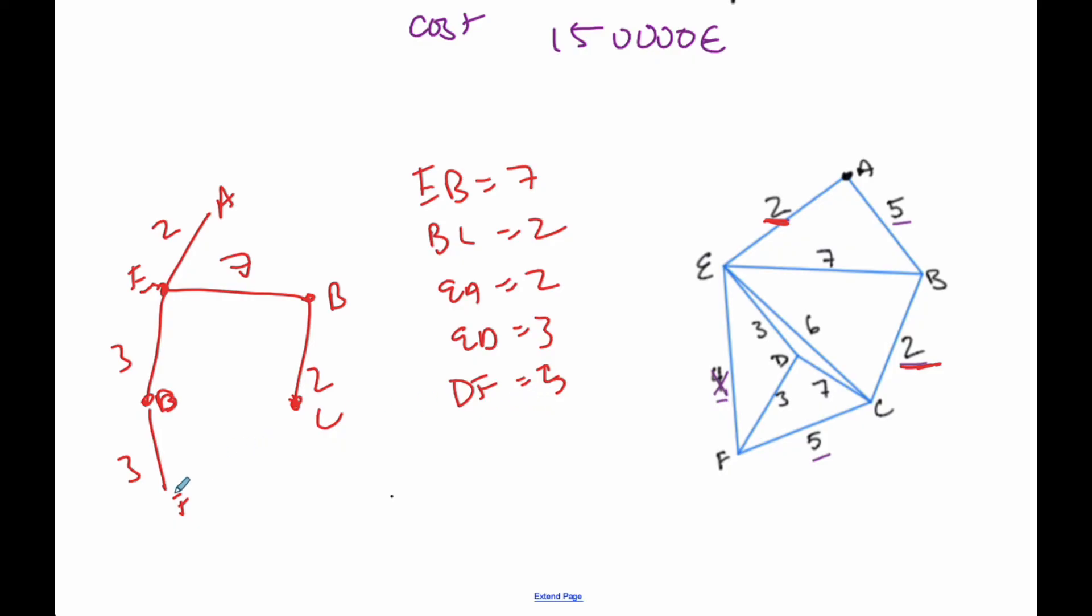And then I cannot connect these up. If I would connect those up, I would have a cycle, which I'm not allowed to do. So I cannot connect those up. I look for the next 5 is here, A to B. But that also connects me. But I'm all done. I have all my vertices, 1, 2, 3, 4, 5, 6. I don't want to connect them up because I'm all done.